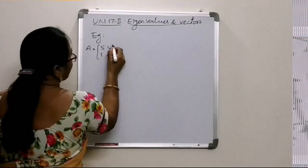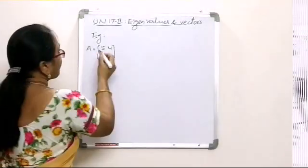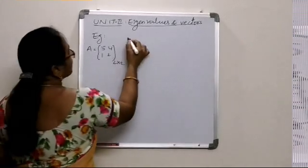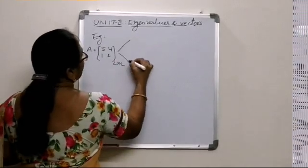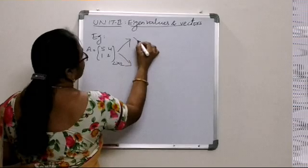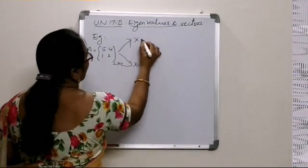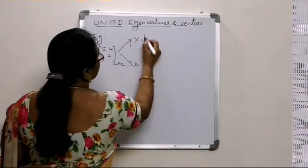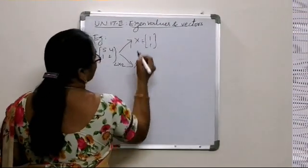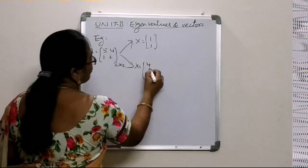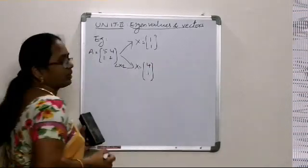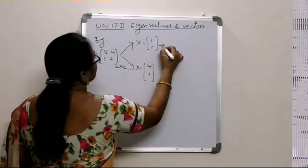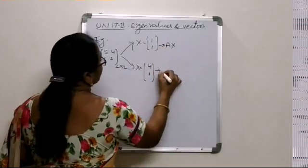Suppose we are given a matrix A equal to [5, 4; 1, 2] — a 2 by 2 matrix. Also suppose we are given two different column matrices, also called column vectors. In the first case, suppose we choose x equal to the column [1, 1]. In the second case, suppose we choose x equal to the column [4, 1]. Let us see what the products A times x are in each case.